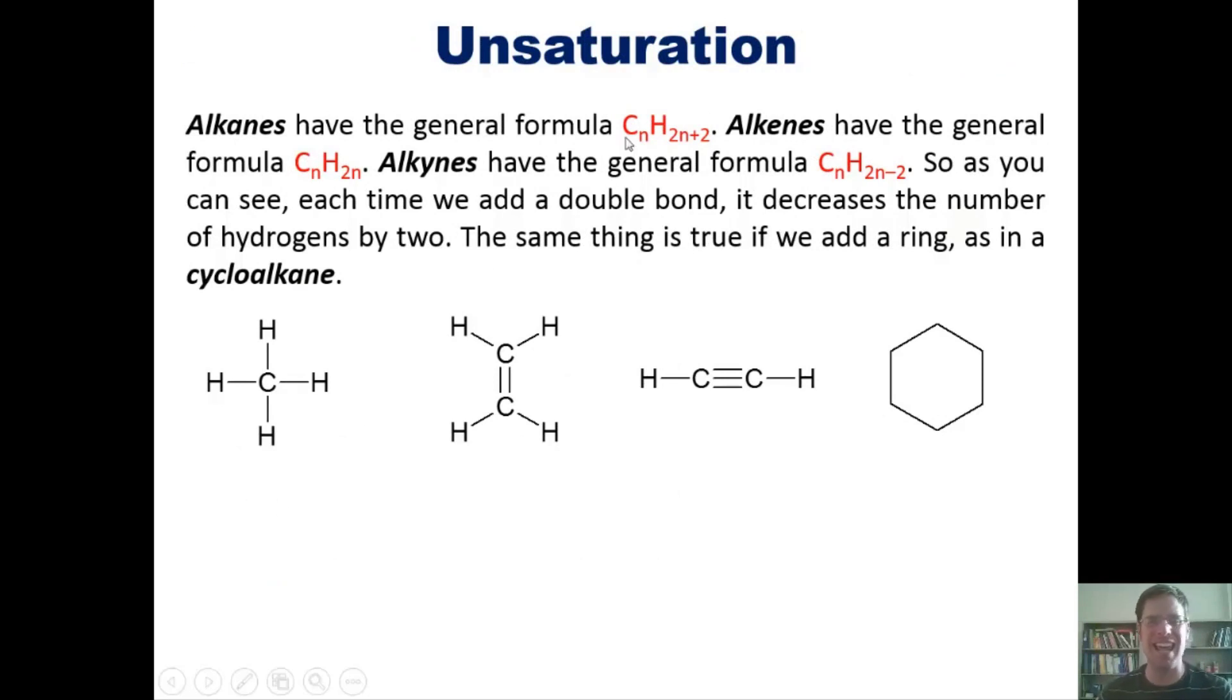Alkanes have the general formula CnH2n+2. If you doubt me, put in one for n and see if it matches this molecule. Alkenes have the general formula CnH2n. Alkynes have the general formula CnH2n-2. As you can see, each time we add a double bond, it decreases the number of hydrogens by two.